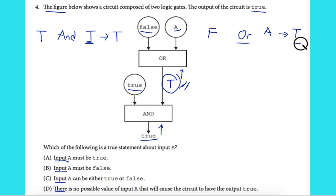At least one true gate. Which means A must be true, because we have false here. A must be true so that the output will be true.